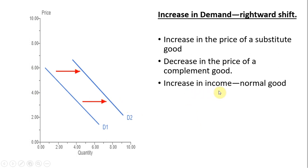If we have an increase in income, and it's a normal good, consumers will buy more of it. Demand shifts right.